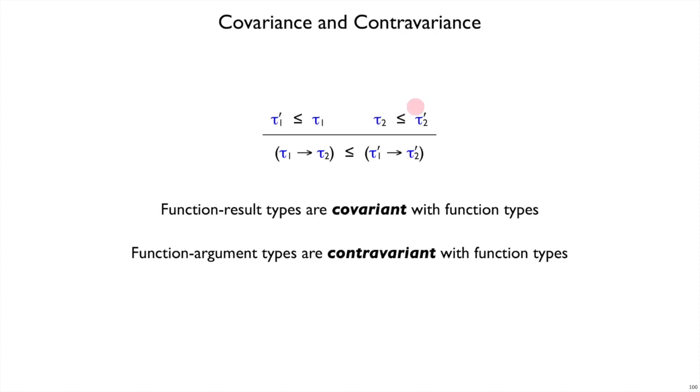Tau2 is on the left, tau2 prime is on the right, just like when it's embedded in the arrow type. That is called a covariant position.